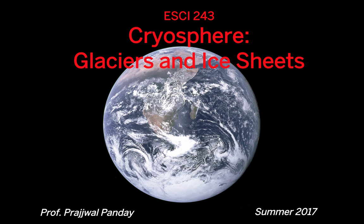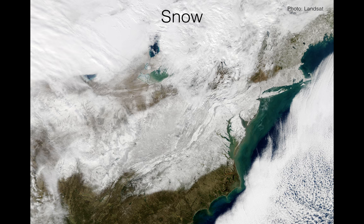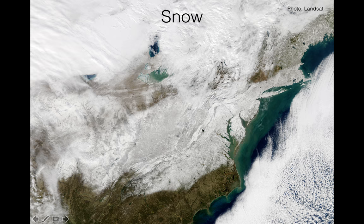So what other things do we see that are parts of the cryosphere? One common aspect is snow. We are very familiar with this phenomenon, particularly in the New England region. Large swaths of the New England region and the northern parts of the North American continent are covered with snow, particularly in the wintertime. And as you can see, this hugely changes the entire appearance of the whole land surface.